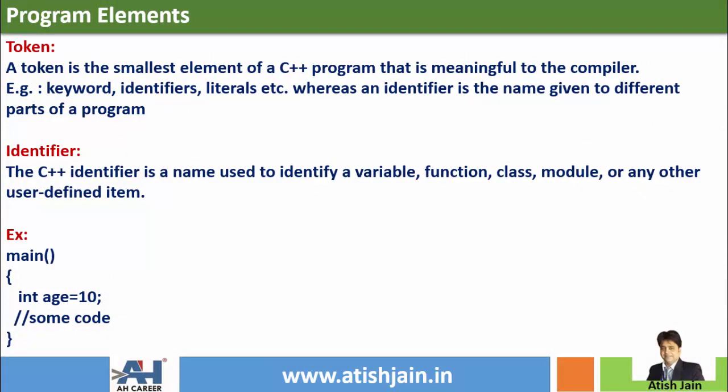Token is the smallest element of a C++ program that is meaningful to the compiler. That is a small part. For example, what are keywords? Identifiers? Literals? What are tokens?